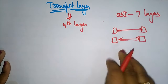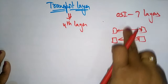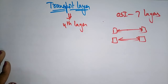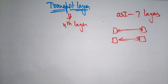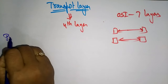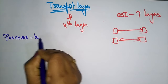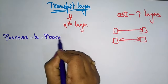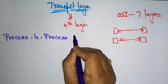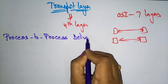In the transport layer, the main name is process-to-process delivery. Let's see what this process-to-process delivery means.